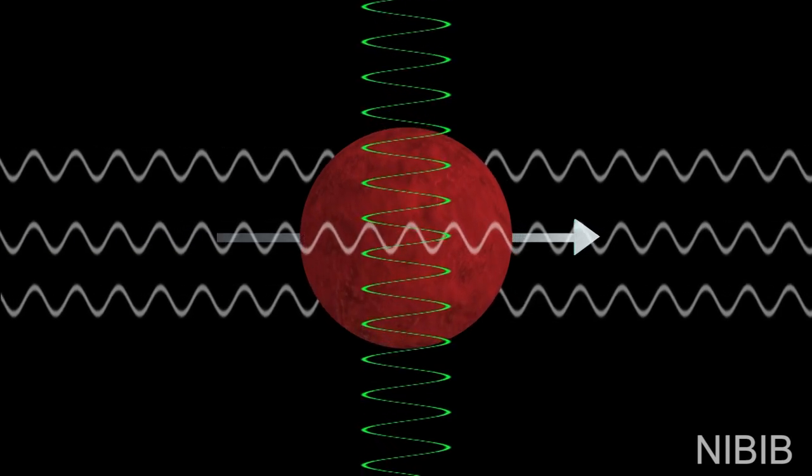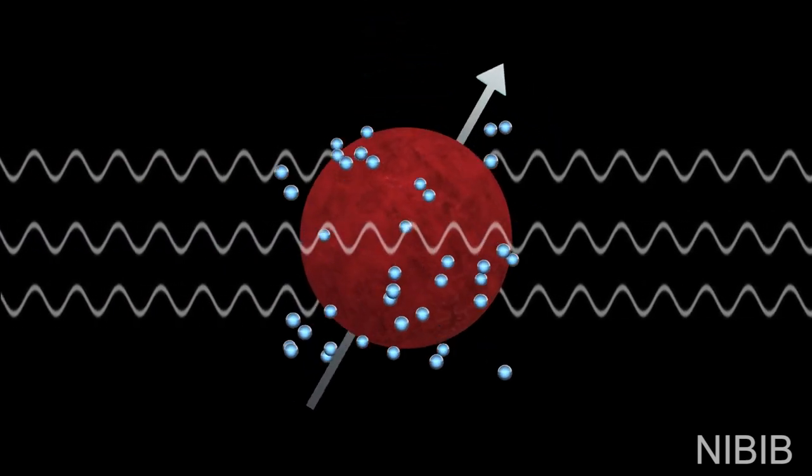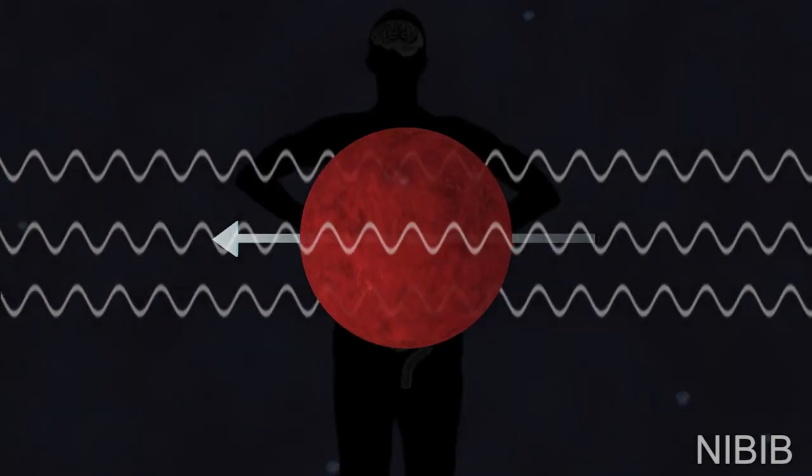Since the radio frequency pulse pushes the proton against its nature, once this pulse is turned off, the protons realign with that magnetic field, releasing electromagnetic energy along the way.